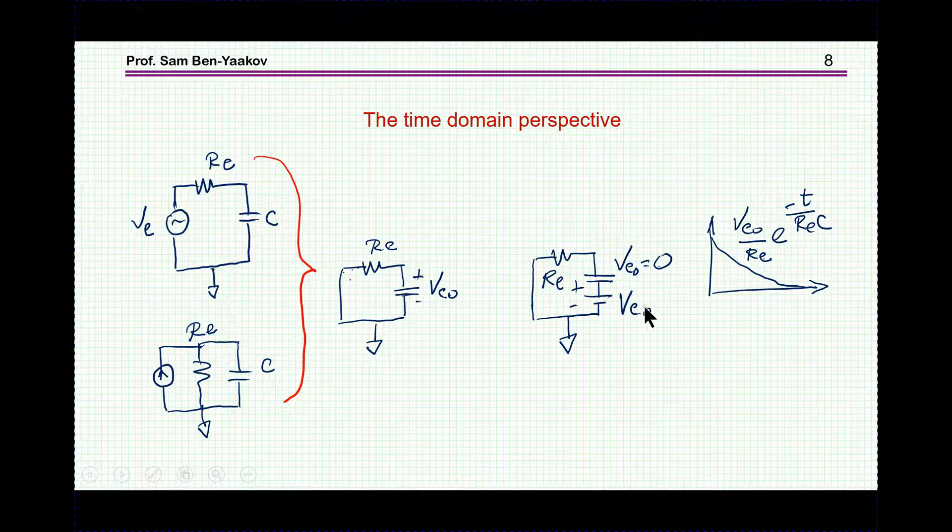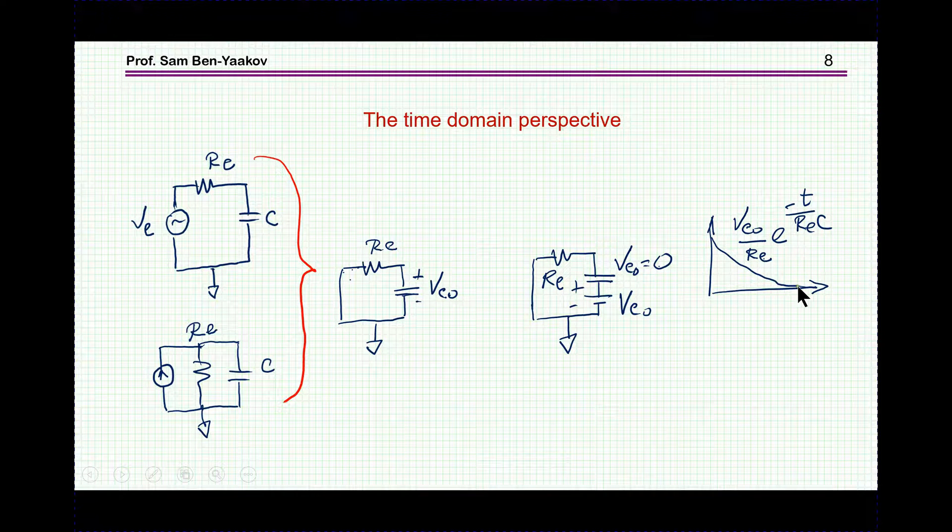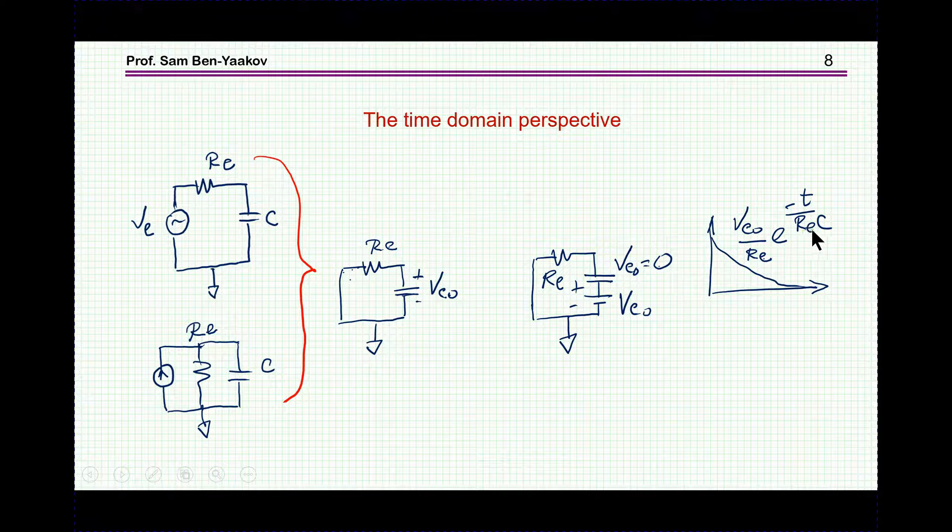This can be then translated into a model which has a capacitor with zero initial condition, zero voltage, and a voltage source. And obviously, there'll be a curve like this in the time domain, and it'll be with a time constant RC. No question about that.